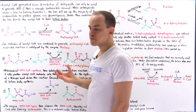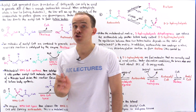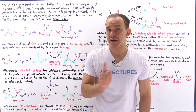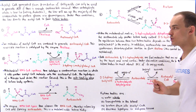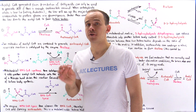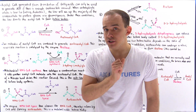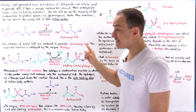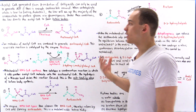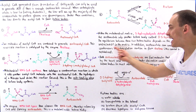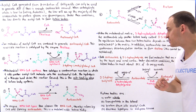Our liver produces small amounts of ketone bodies normally because certain cells prefer to use ketone bodies as their major energy source. The cells of the renal cortex and the heart prefer to use ketone bodies over glucose molecules. On the other hand, cells found in the brain prefer to use glucose over ketone bodies. But under starvation conditions, the brain will actually use ketone bodies — in fact, 75% of the energy needs of the brain will come from breaking down ketone bodies.